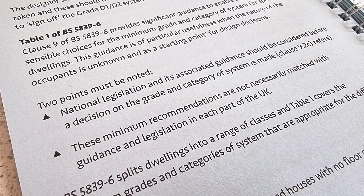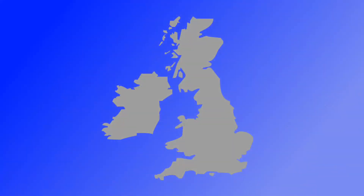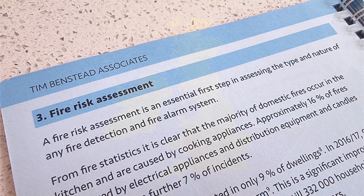Basically, there may be requirements that specifically apply to the area we're working in that are more stringent and supersede the information in Table 1. Also, the decision as to which system and category to go for will be influenced by a risk assessment undertaken by the designer, but the information in Table 1 is a good starting point.